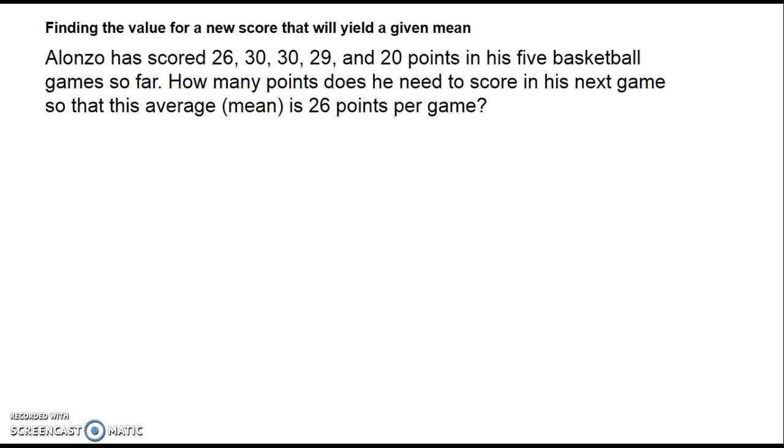In this example, we are given Alonzo's scores for his first five games, and we need to calculate his score in the next game so that the mean will be 26.